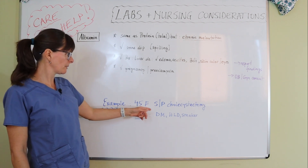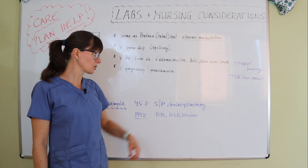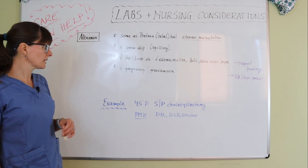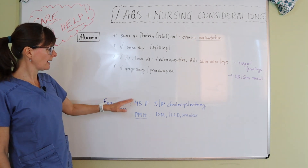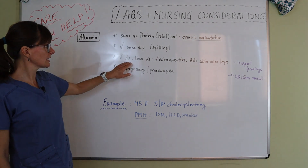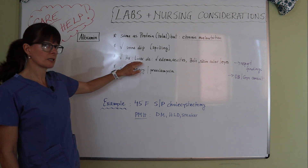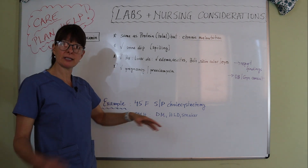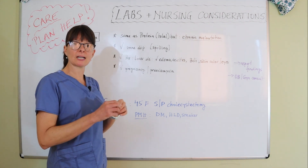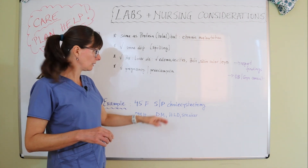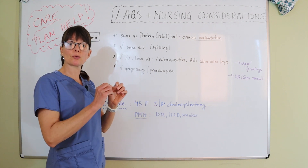In the patient we've been using for these examples — a 45-year-old female post-cholecystectomy with a past medical history of diabetes, hyperlipidemia, and smoking — if we're analyzing her albumin level and she had a history of liver disease, or even thinking about the connection between the liver and gallbladder, we know that common bile duct obstruction could occur after cholecystectomy if a stone got lodged.